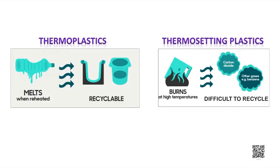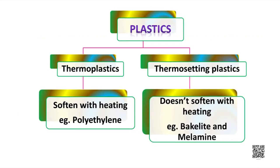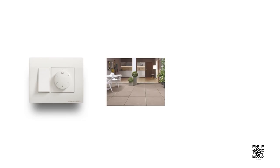Some plastics, when molded once, cannot be softened by heating. Bakelite and melamine are examples of this category — such plastics are called thermosetting plastics. Bakelite is a poor conductor of heat and electricity, whereas melamine resists fire and can tolerate heat better than other plastics. These thermosetting plastics are used for making articles such as electrical switches, floor tiles, and kitchenware.